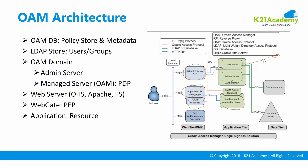Now let's look at how the flow happens. Assume everything is configured and this application is protected with Oracle Access Manager with a WebGate on the web server. A user will try to access the application — but the user will never talk to the application server directly. There is a firewall that will not let any user connect directly to the application server, so the user always connects to the web server.